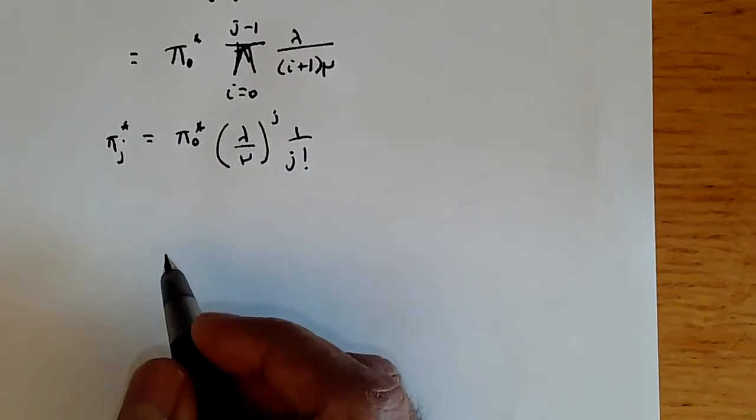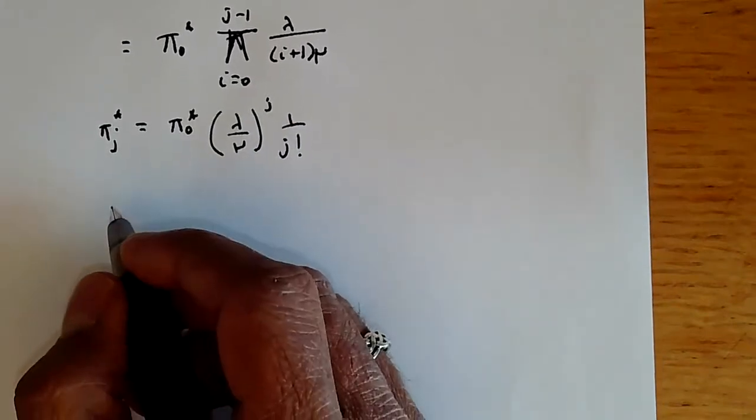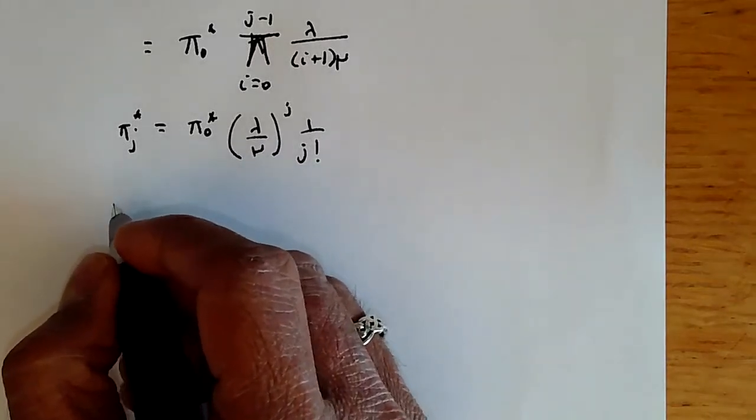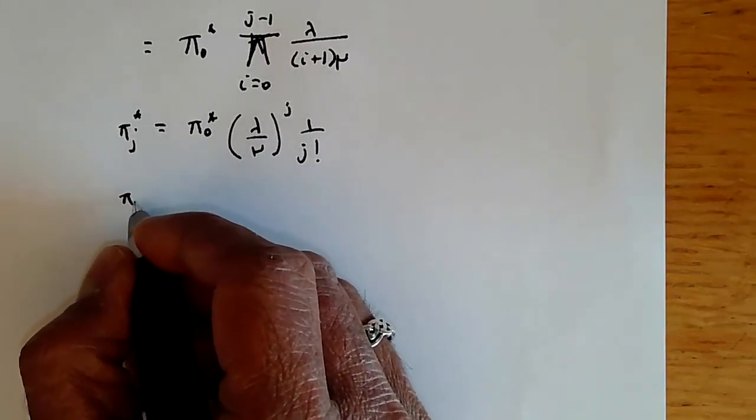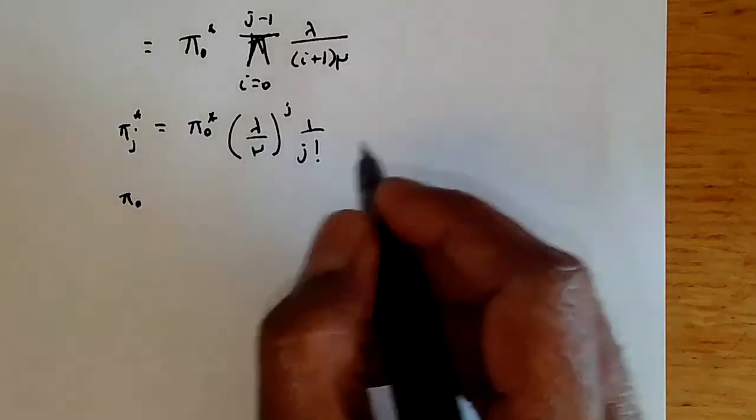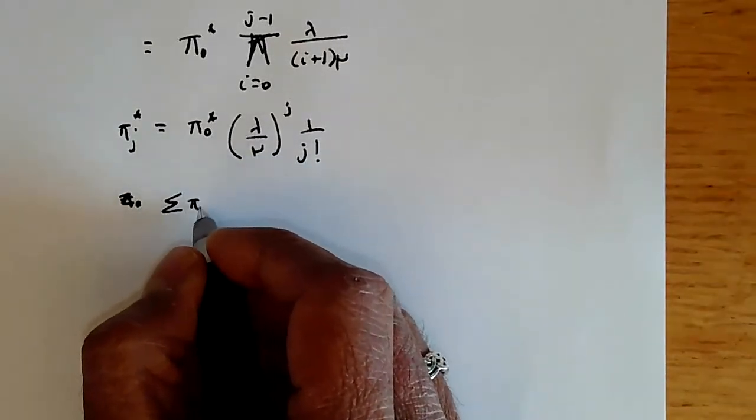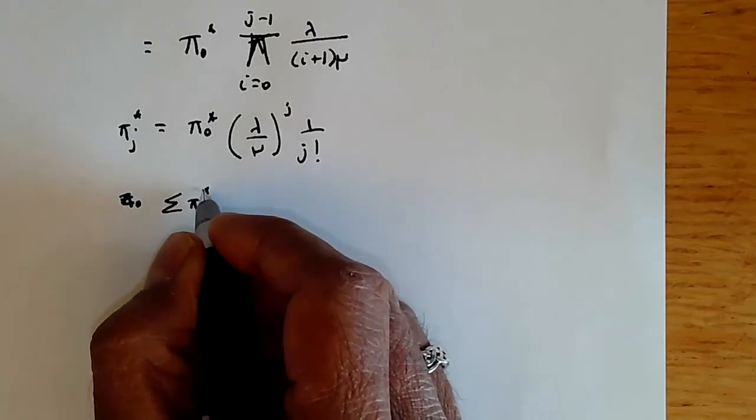And we now need to solve for pi 0 star. And to solve for it, we're going to use the same approach, which is we're going to say pi 0 star. So we know that sigma pi i star equals 1.